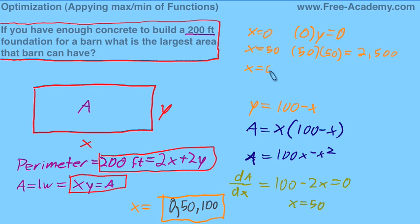And then for x equals 100, we get 100 times 0, which equals 0. So there's a clear favorite here, and it occurs when x equals 50, and in turn y equals 50. That's our maximum area.